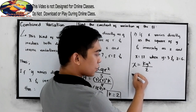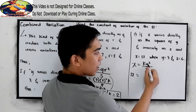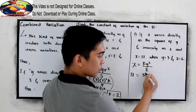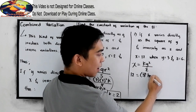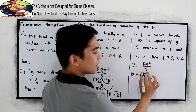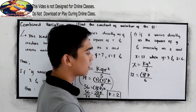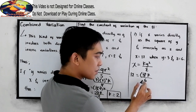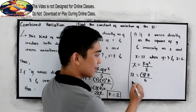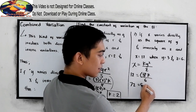x is equal to 12, so change x to 12, and y is equal to 3, so 3 squared, copy k, all over z is 6. Now cross-multiply: 12 times 6, that is 72, is equal to 3 squared, that is 9k.